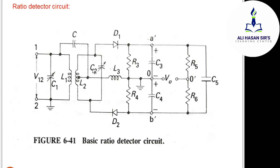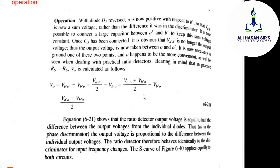In the ratio detector circuit with secondary tuned circuit L2C2, when an FM signal is given as input to the transformer, it converts to amplitude variation. That amplitude variation is then converted to the original information signal. The output voltage VO is the difference of the upper secondary voltage minus the lower secondary voltage.